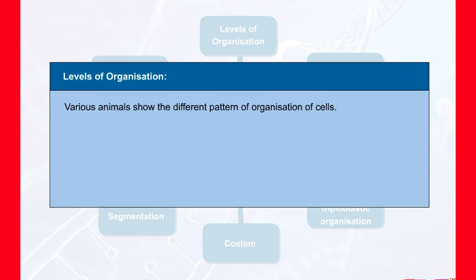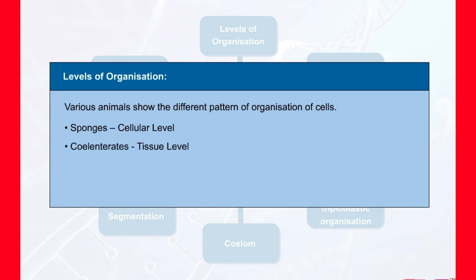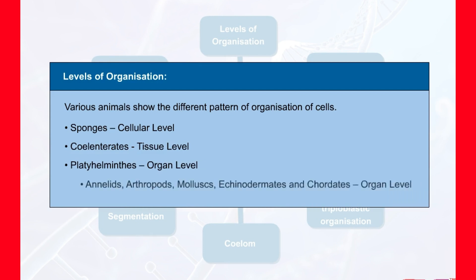Let us understand them one by one. Levels of organization: various animals show different patterns of organization of cells. For example, in sponges the cells are loosely arranged — they exhibit cellular level of organization. In coelenterates the cells show tissue level of organization, while members of Platyhelminthes exhibit organ level of organization. In higher phyla like Annelida, Arthropoda, Mollusca, Echinodermata, and Chordata we find the organ system level of organization, which exhibits various patterns of complexity.